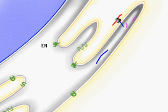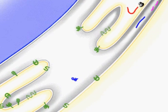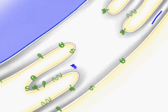There, the signal sequence is cleaved, sugars are added, and the protein folds. Some enzymes or structural proteins remain in the ER.